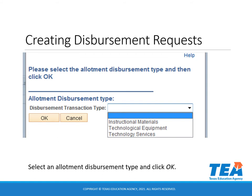After clicking next, a disbursement type box will appear where you have a choice of three types of disbursements to choose from: instructional materials, technological equipment, and technology services. You can find examples of allowable and non-allowable expenses of each type on the TEA website under Technology and Instructional Materials Allotment. After choosing a disbursement type, click OK.